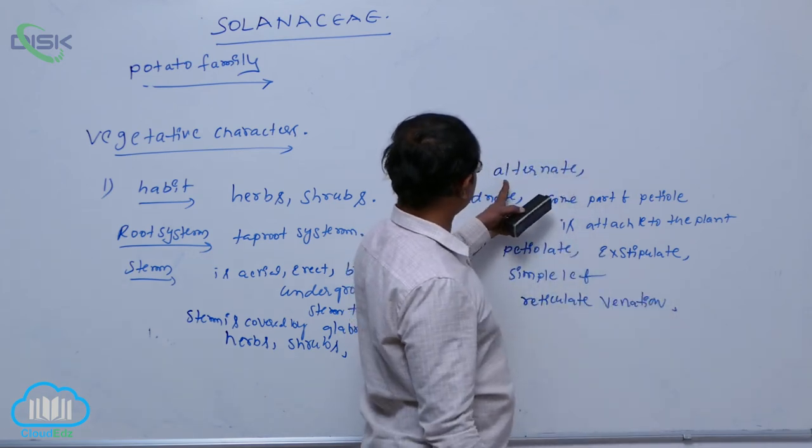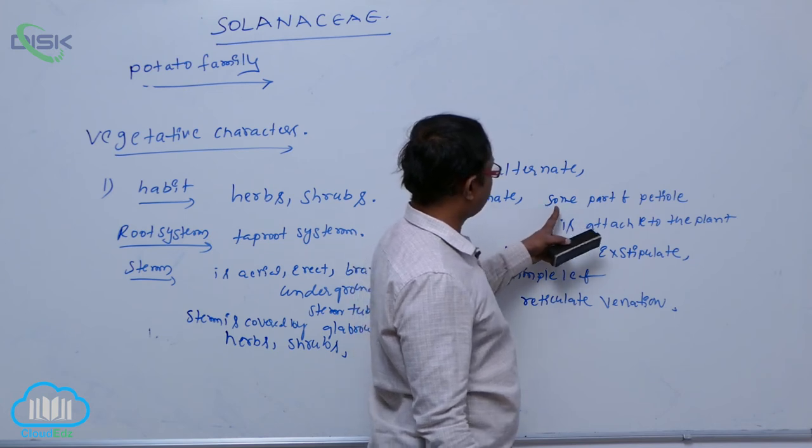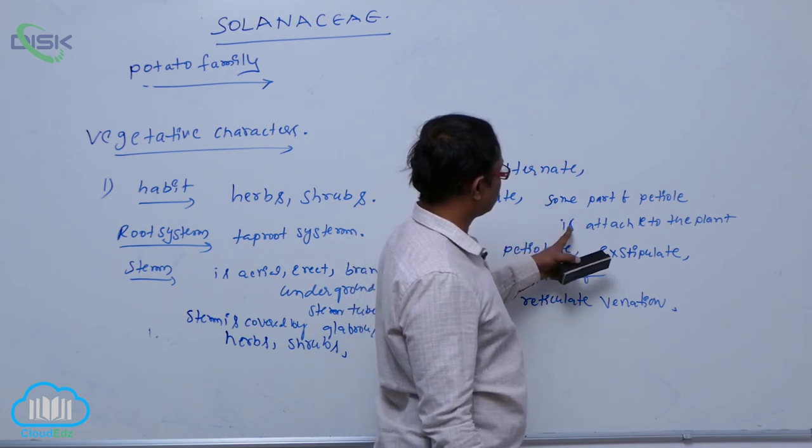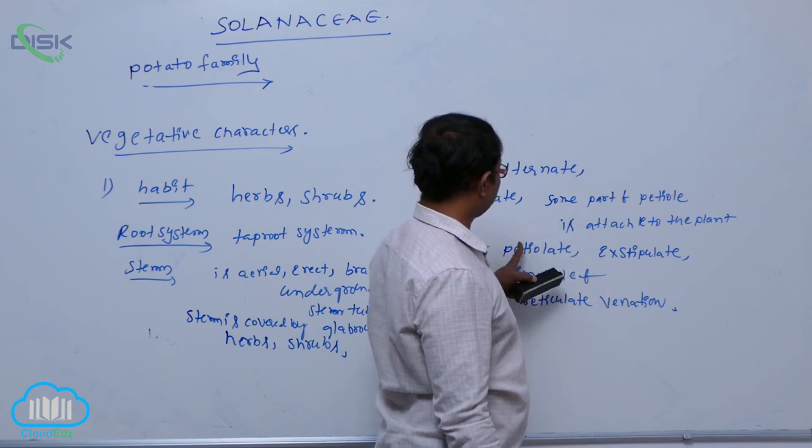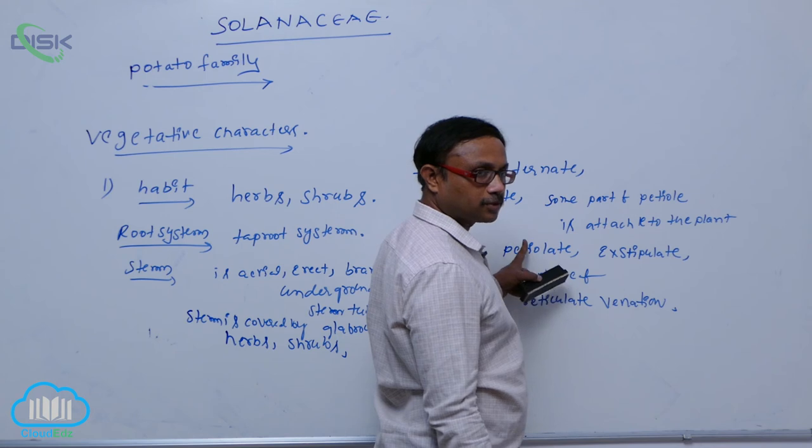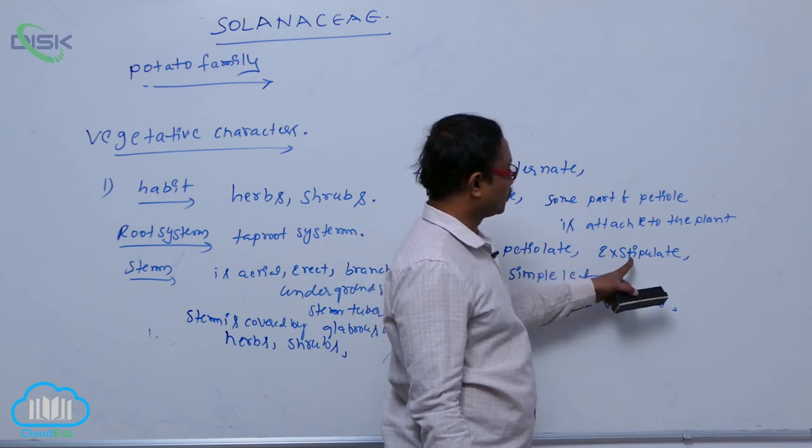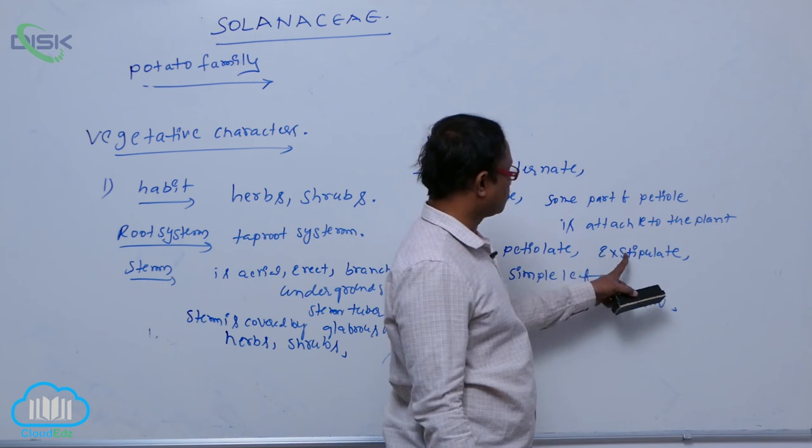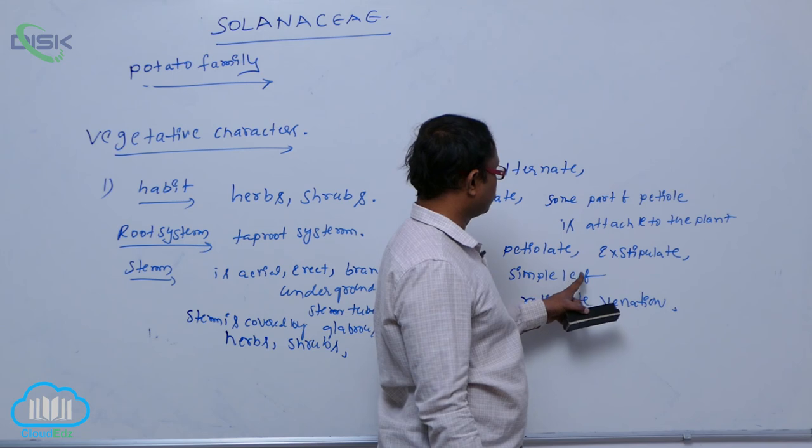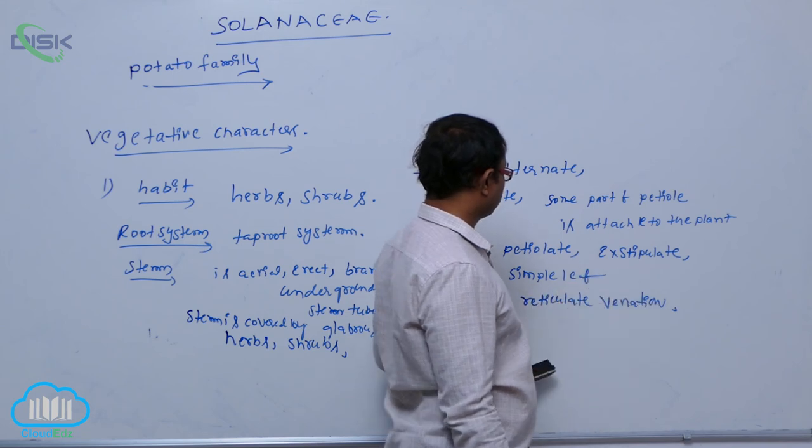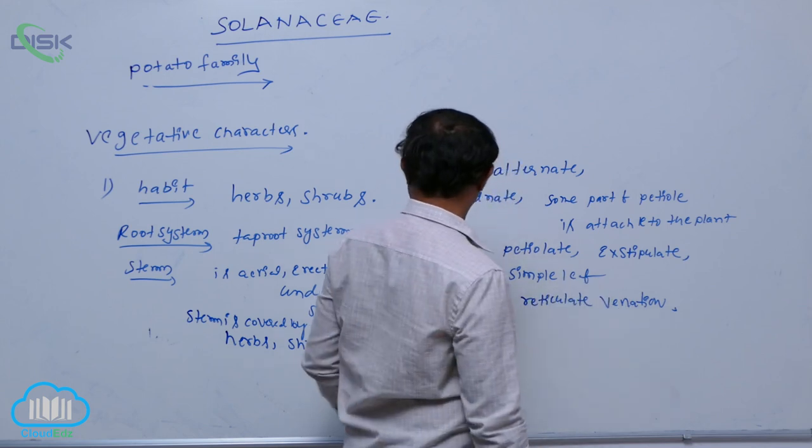To summarize the leaf: alternate phyllotaxy, ornate meaning some part of the petiole is attached to the plant. Petiolate leaf, exstipulate meaning stipules are absent, simple leaf with compound leaves absent, showing reticulate venation.